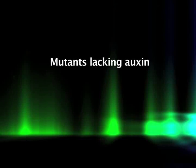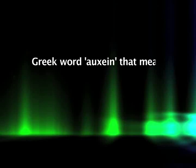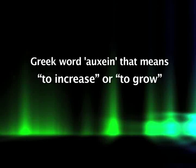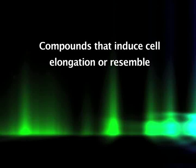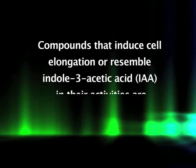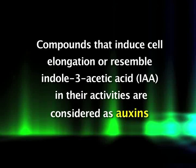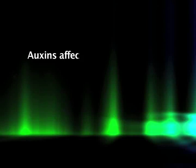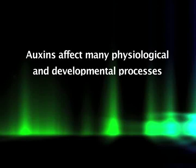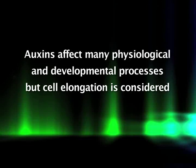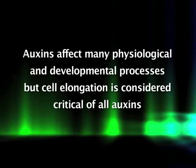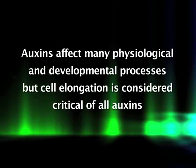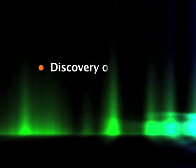Among all plant growth regulators, auxin was the first growth regulator to be discovered. The role of auxins in plant growth is so important that mutants lacking auxin are not viable. The term auxin has been derived from the Greek word meaning 'to increase or to grow.' Compounds that induce cell elongation in coleoptyles and stem sections, or resemble indole-3-acetic acid (IAA) in their physiological activities, are considered as auxins. The ability to induce cell elongation is considered the critical defining characteristic of auxins.